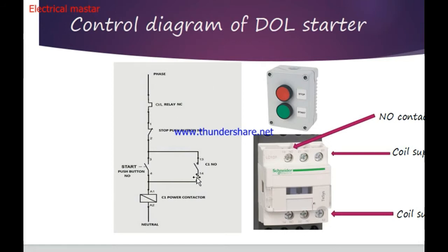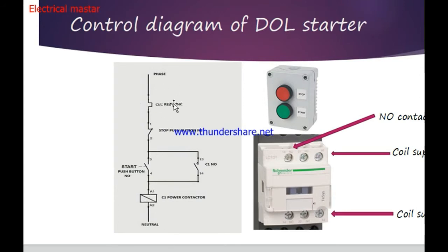If the motor is overloaded, the overload relay — already connected to the motor — has a set point at 120% of full load current. When the overload relay activates, its NC contact opens. Since the NC contact is open, the control supply is cut. The phase supply is interrupted, the magnetic contactor de-energizes, and the motor turns off. This is how the overload relay saves the motor. This is the main control operation of DOL Starter.